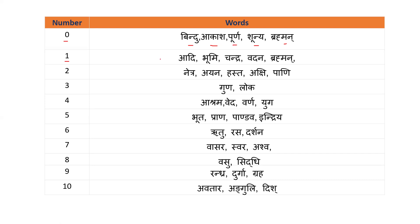For number 1, whichever word represents 1: Adi means beginning, Bhumi is Earth, Chandra is Moon, Vatana is Face, Brahma — all representing 1. For number 2, Netra means eyes — 2 eyes. Dakshinayana and Uttarayana are 2 Ayanas. Hasta means 2 hands, Akshi again means 2 eyes, and Pani means 2 hands — Hasta is palm and Pani is 2 hands.